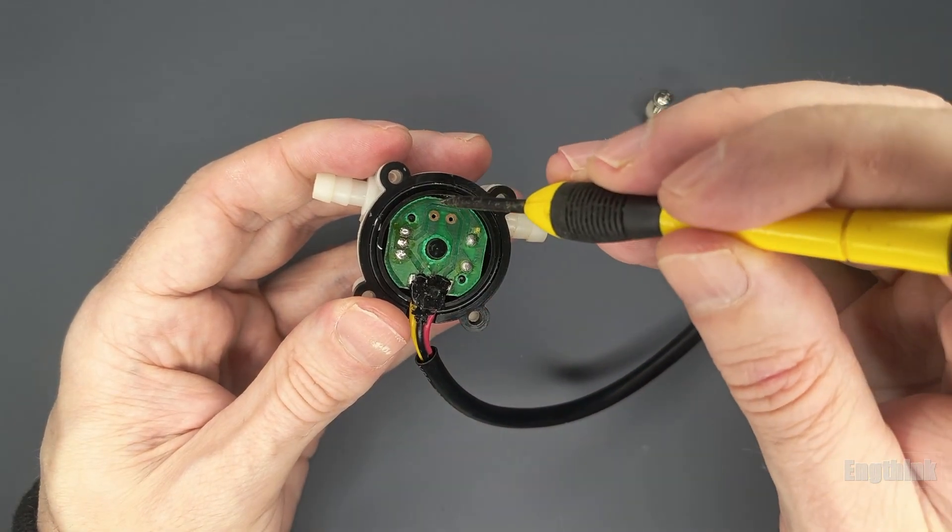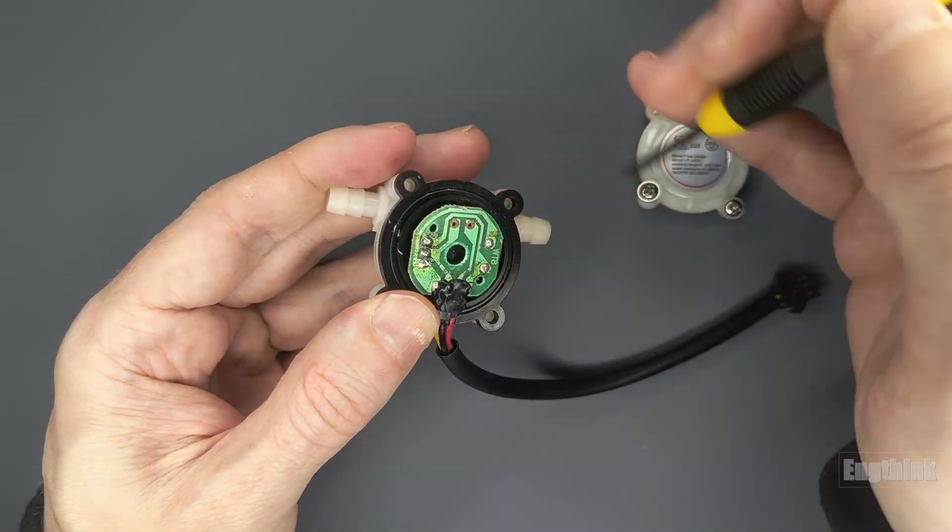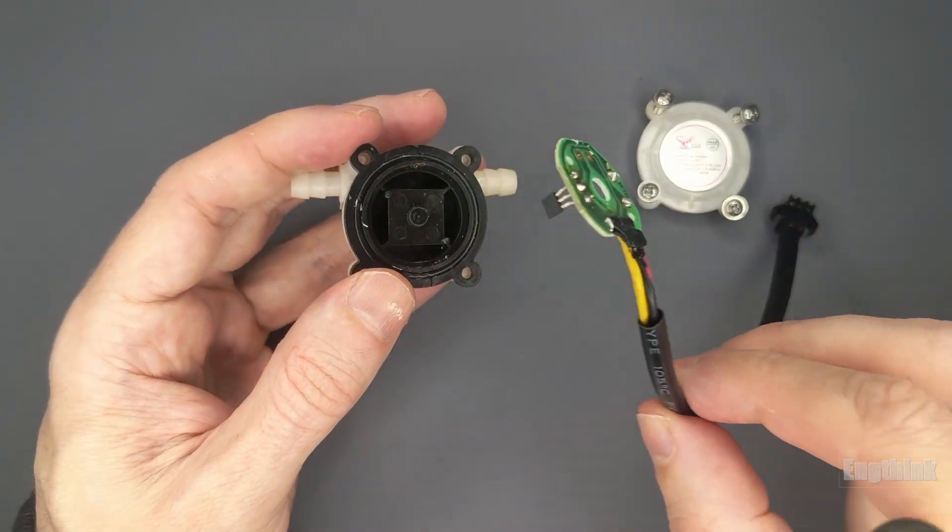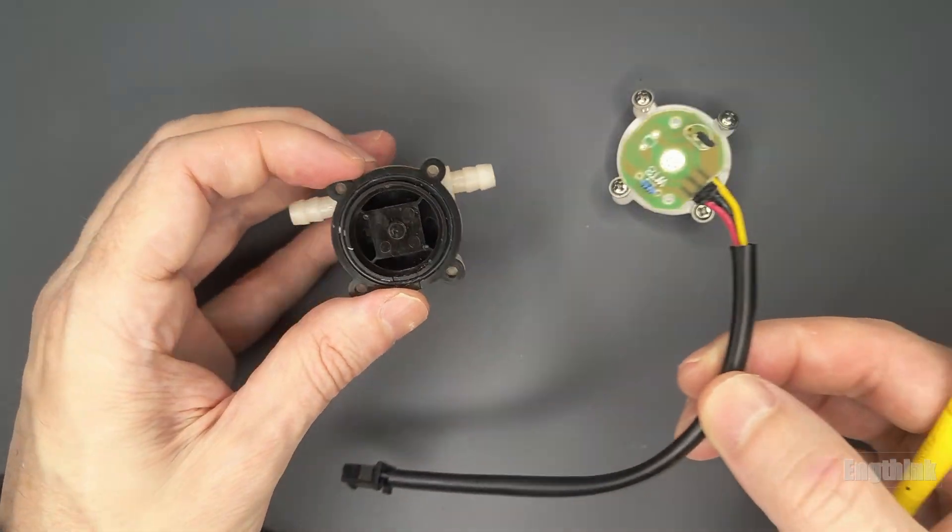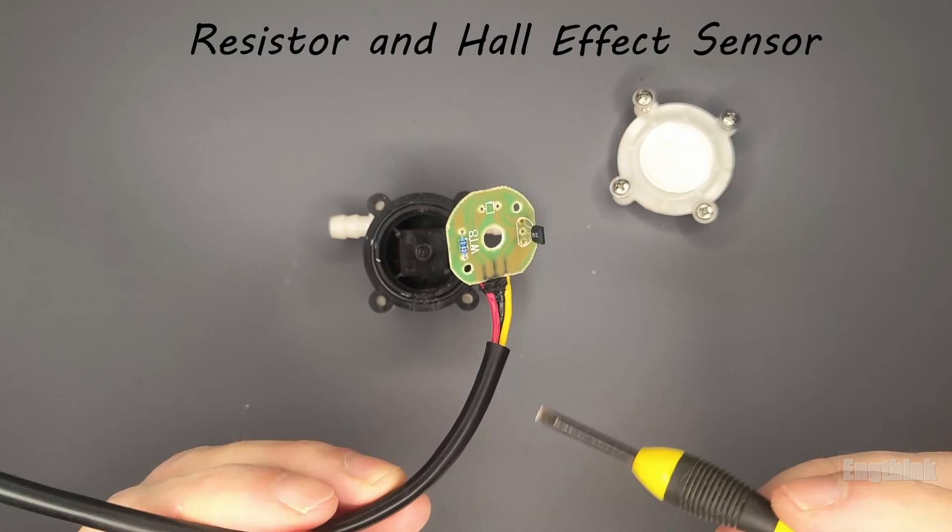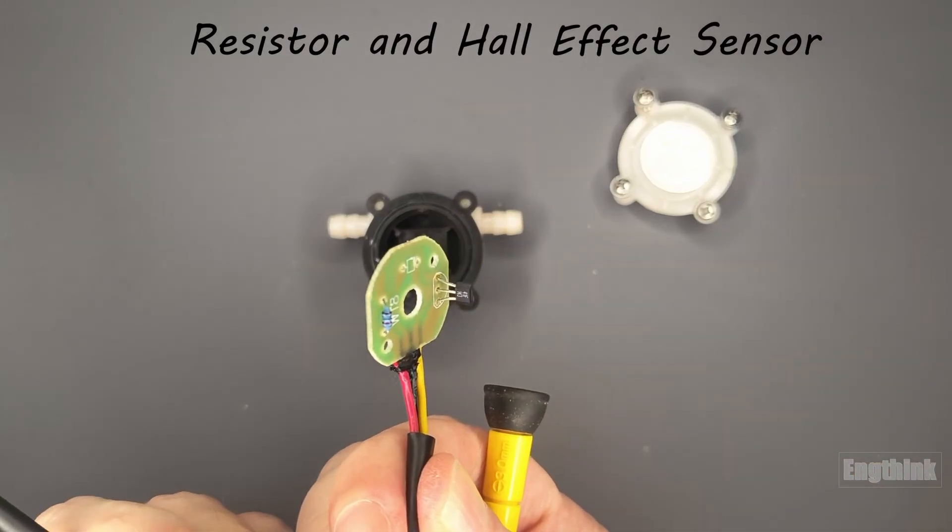Inside, you'll see a circuit board, which can be carefully extracted. The circuit board contains some key components: a resistor and a Hall effect sensor responsible for detecting magnetic fields.